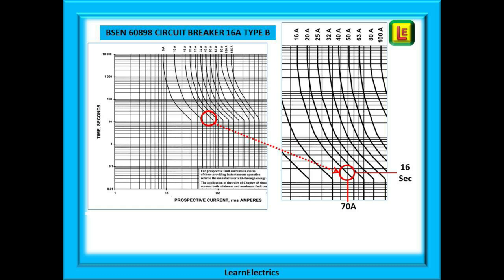Find 70 amps along the bottom row. Follow the vertical 70 amp line up until it meets the curve that is labelled 16 amps as shown at the top. Use a ruler or a straight edge if needed I do. Where the two lines cross follow your eye to the left hand side to find the number of seconds which in this case is about 16 seconds. So a BS EN 60898 Type B breaker with an overload of 70 amps will take 16 seconds to operate.